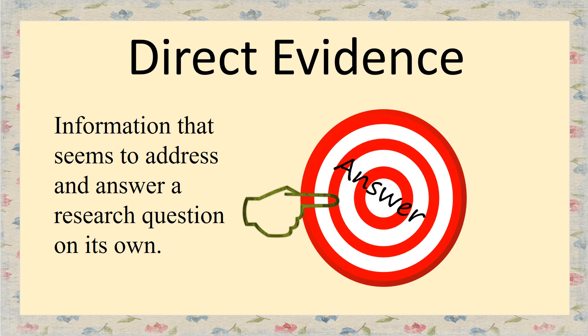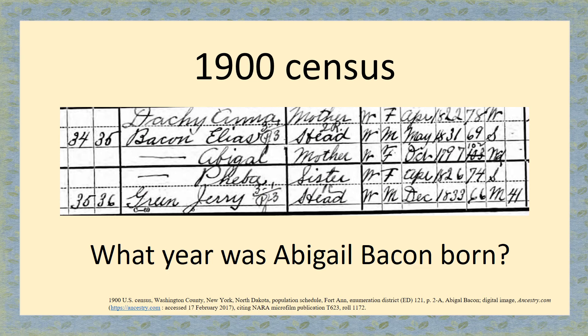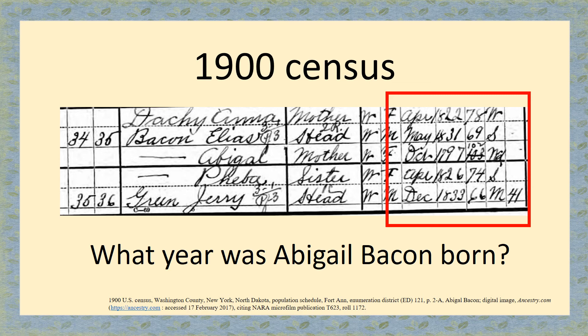Direct evidence is information that seems to address the research question on its own, with no other help needed. Let's say our research question was: what year was Abigail Bacon born? We found Abigail Bacon in the 1900 census living with her son, and the 1900 census lists which year every individual was born. It says Abigail Bacon was born in 1797 — that directly answers our research question. Does that mean it's completely right? Maybe, maybe not. We need a little more information to be sure, but it directly answers our question.